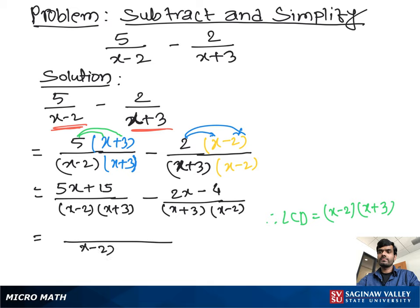So we take LCD x minus 2 times x plus 3. Then we can write 5x plus 15 minus 2x, and minus minus is going to be plus, so plus 4. Now, 5x minus 2x, which is equal to 3x, and 15 plus 4, which is 19.